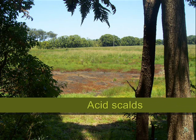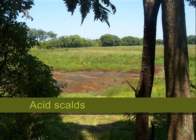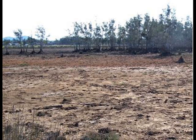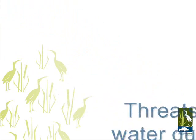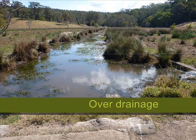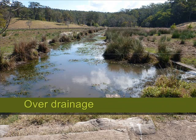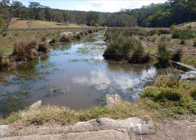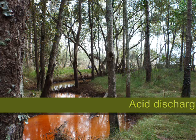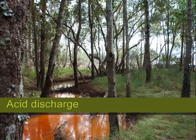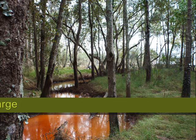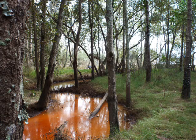Acid sulphate scalds occur when acid sulphate layers are exposed to oxygen and impacts farm productivity and water quality. Overdrainage lowers both ground and surface water and may act to expose acid sulphate soils and reduce farm productivity. Acid discharge can impact downstream waterways, often resulting in fish kills or disease.